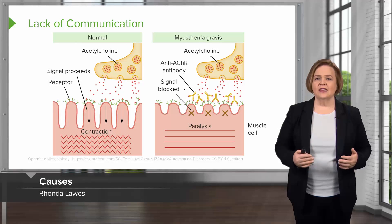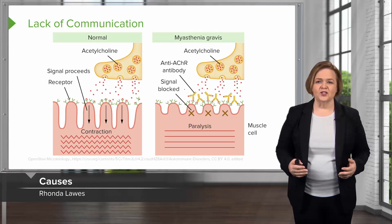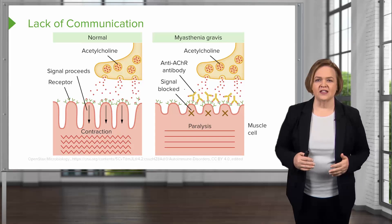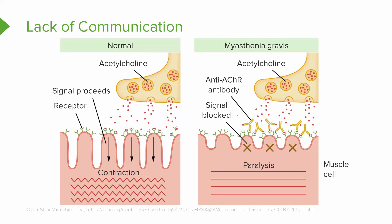Myasthenia gravis is a lack of communication, and we have some really cool pictures to help you understand this. Normally, acetylcholine is working the signal — it goes down to the receptors and the muscles contract and move. In myasthenia gravis, we've got a problem there. The nerves aren't connecting or communicating with the muscles as they do in a normal setup, so you end up with the paralysis.